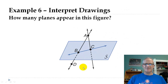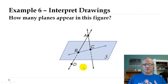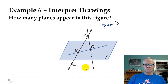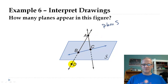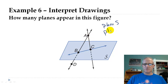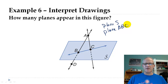Interpret drawings — this can be tricky. How many planes appear in this figure? The obvious one is plane S — that's the blue area drawn here. But remember, it takes three points to make a plane. Even though it's not drawn, points A, B, C, and D define another plane — we could call it plane ABC, CBA, or ADC. So there are two planes, even though only one is explicitly drawn.